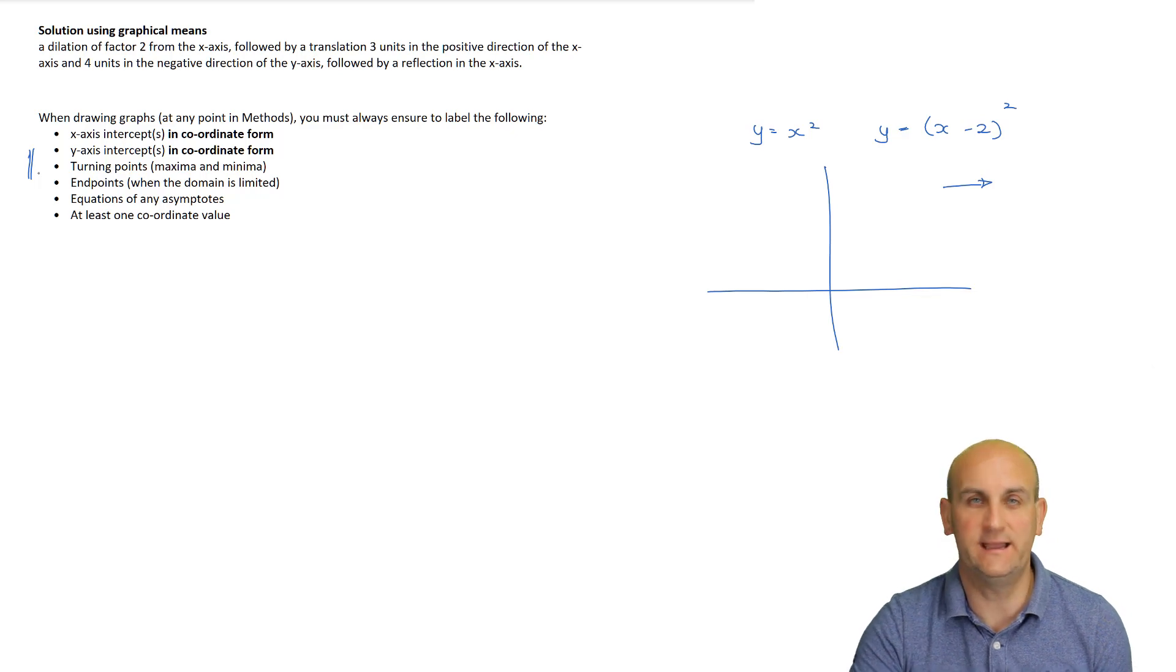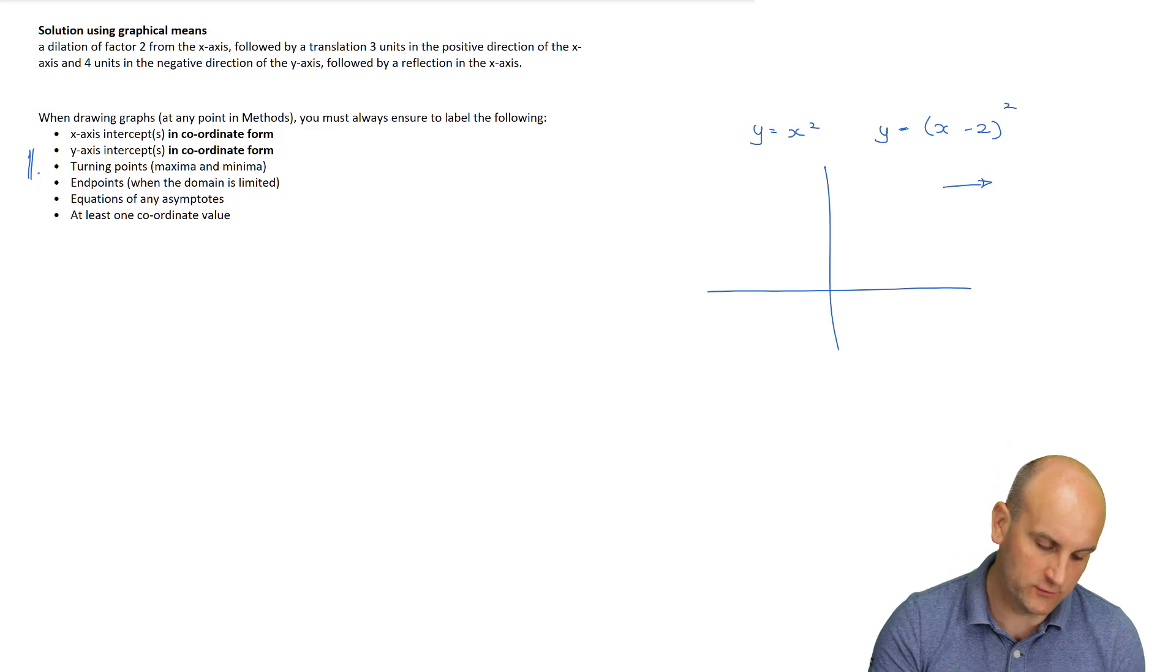One of the key points in methods, and I cannot stress this enough, and probably for all subjects around the world, is where you sketch graphs, there are absolute minimum things you have to label. Now, in many cases, the question will say to you to label all key points. Now, as this course progresses, that actually sort of changes. At this moment in time, we don't really have, for many of the graphs, the ability to find out what maximums and minimums are. So for the start of this textbook, we tend to just put them to one side and just use the knowledge we have if it's a parabola, blah, blah, blah. But later on, we'll actually show you ways of finding the maximum and minimum.